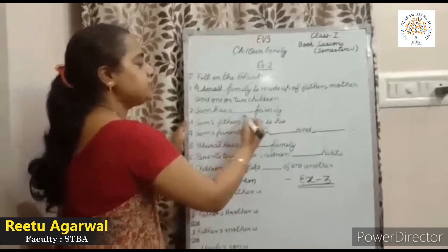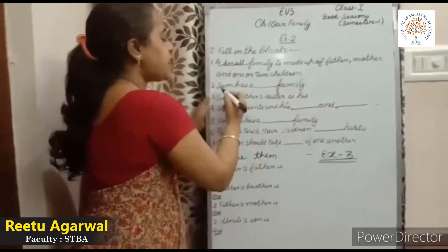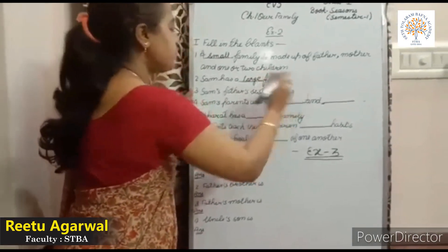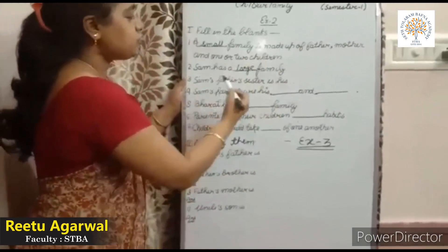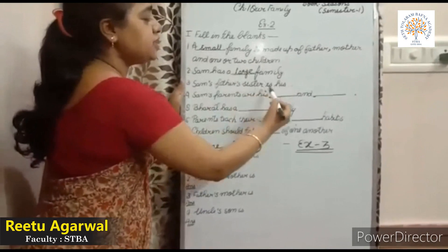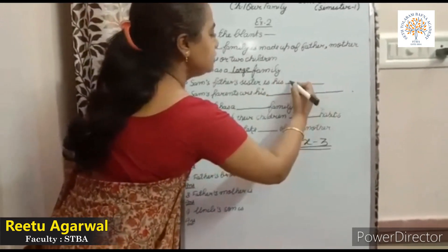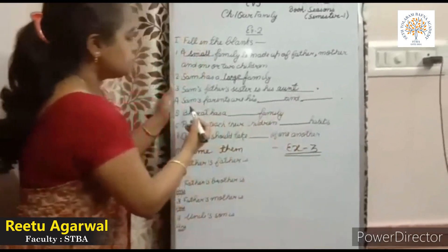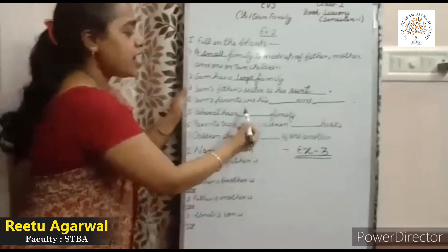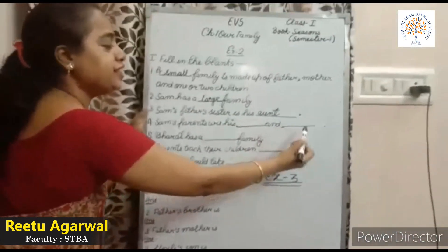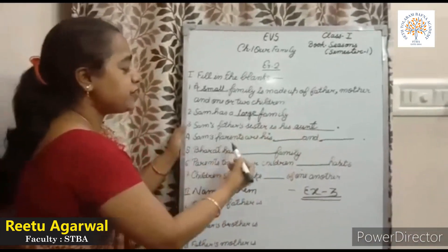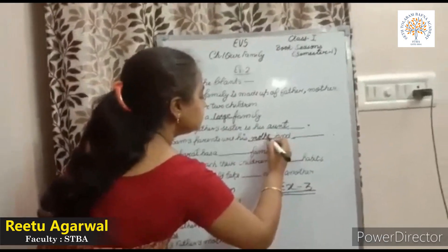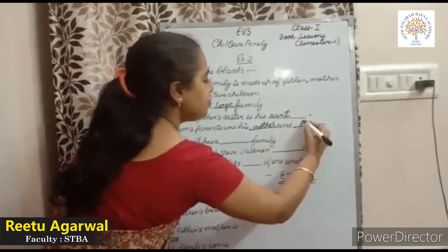Sam has a blank family. Sam has a large family. Sam's father's sister is his aunt. Sam's parents are his blank and blank. Sam's parents are his mother and father.